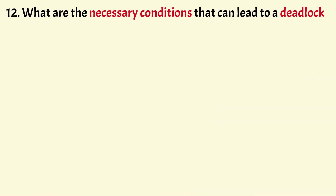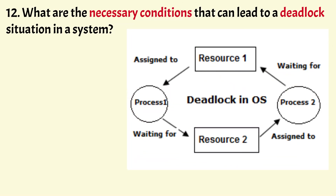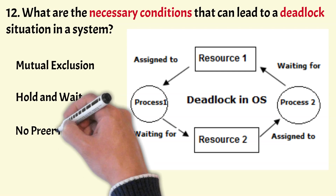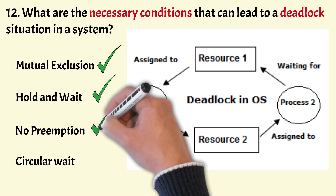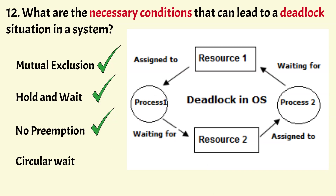What are the necessary conditions that can lead to a deadlock? There are four conditions: mutual exclusion — a resource cannot be shared between two processes, only one process can use it at a time; hold and wait — a process holds at least one resource and waits for another; no preemption — a resource cannot be taken from a process unless the process releases it; and circular wait — a group of processes are waiting for each other to release resources and no one is releasing their own.